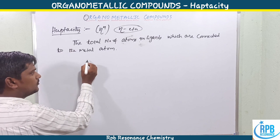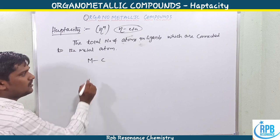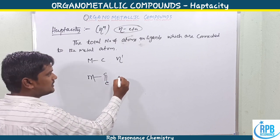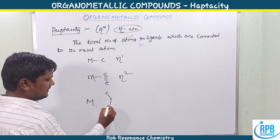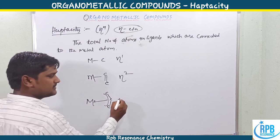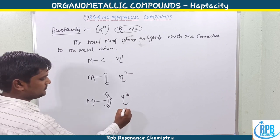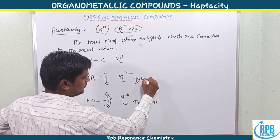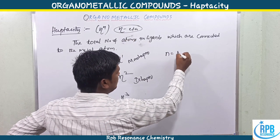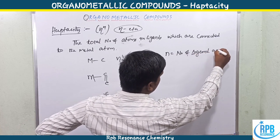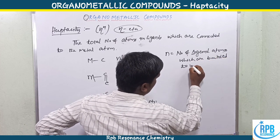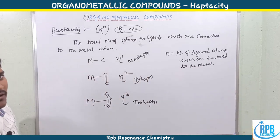If only one metal-carbon bond exists, that is called a monohapto ligand (η1). If two carbon atoms share their contribution to the metal atom, that is a dihapto compound (η2). If three carbon atoms contribute towards the metal atom, it is η3, a trihapto compound. The value n indicates the number of ligand atoms bounded to the metal.